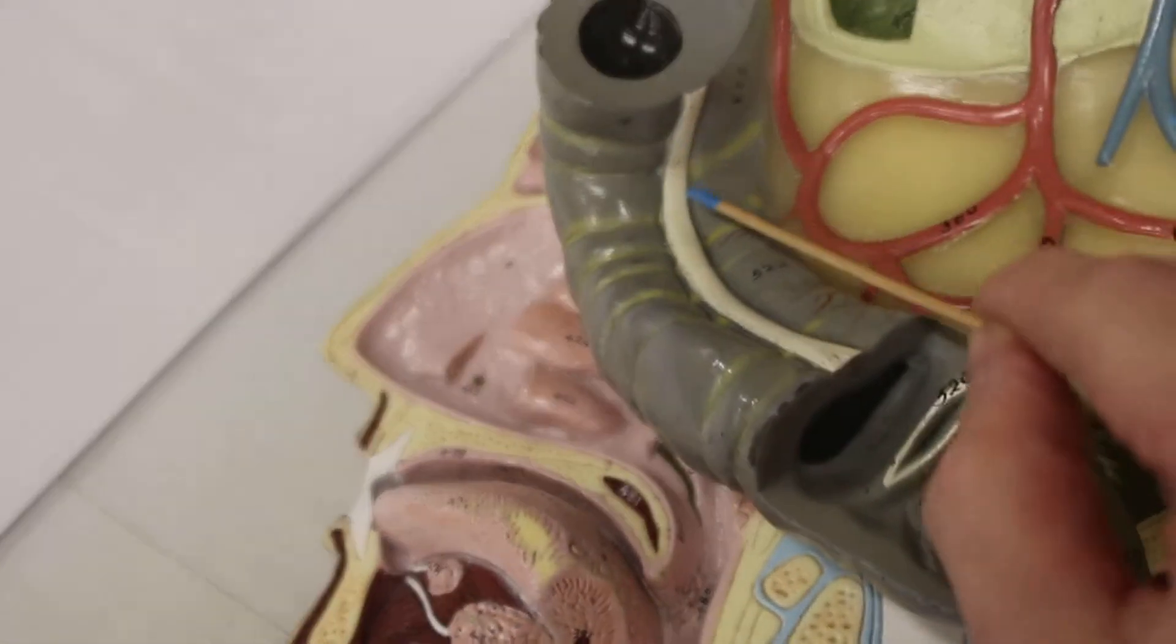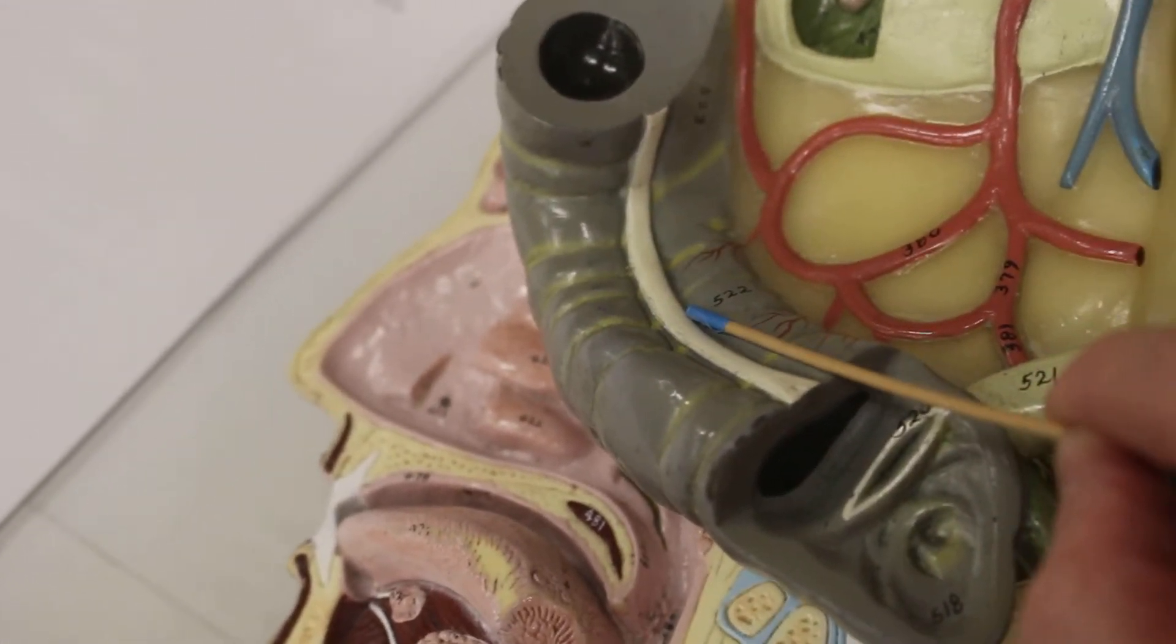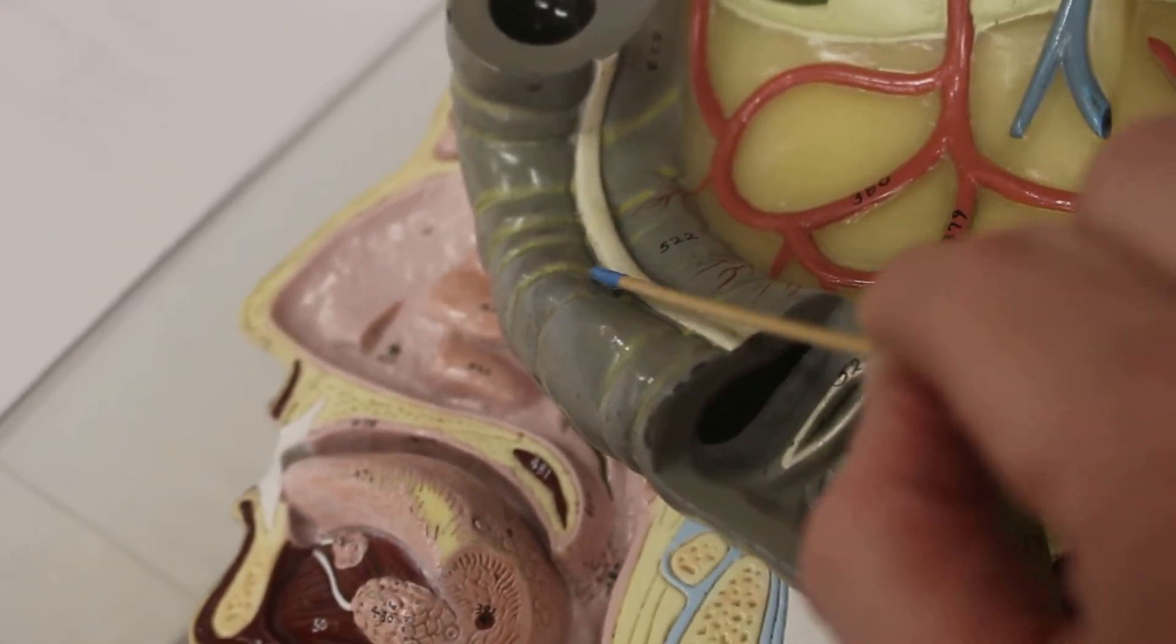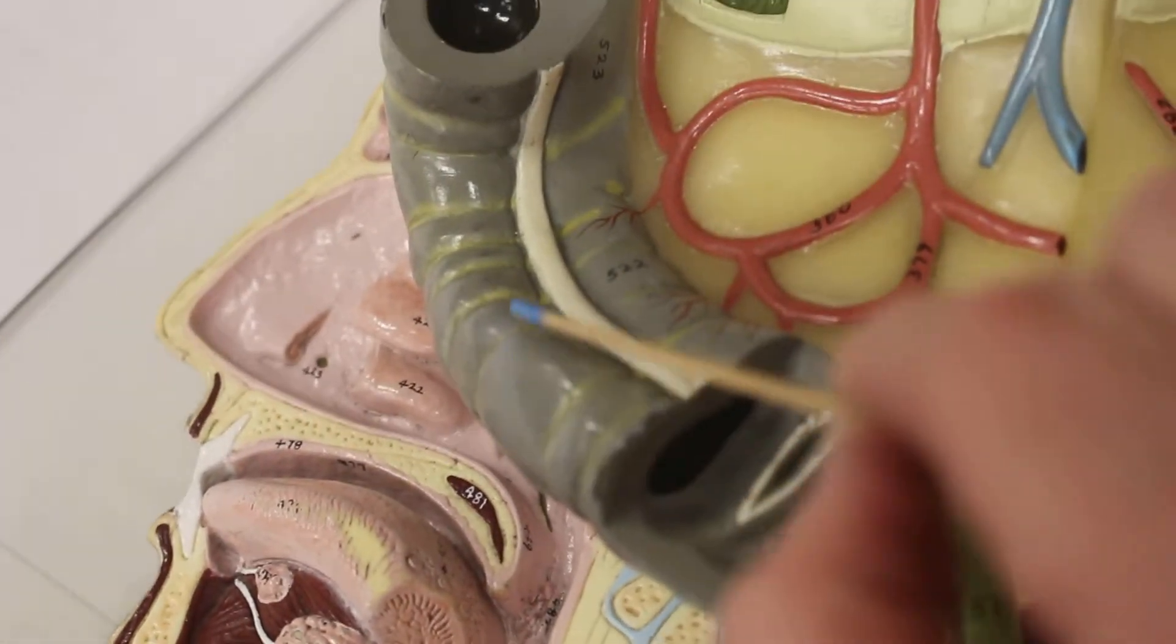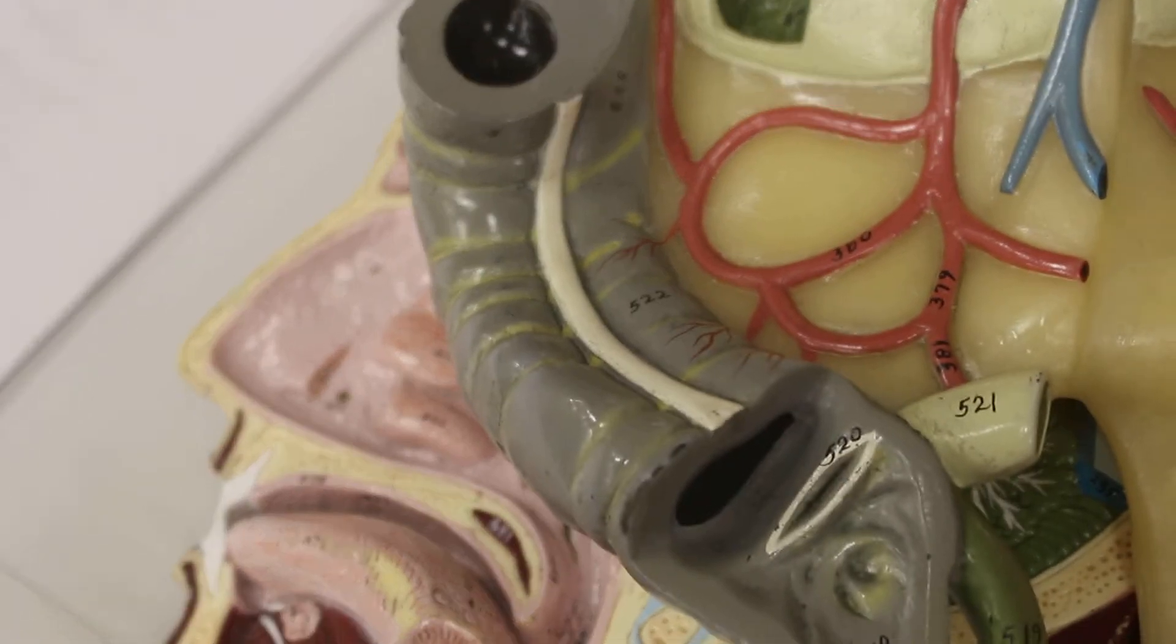Also, this white stripe running along the large intestine, that is the taenia coli. And each one of these little compartments, each one of these pouches are individually known as a haustrum. So one haustrum, many haustra. And that is it for the digestive system.